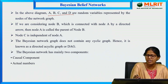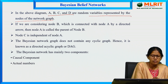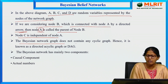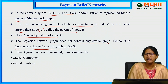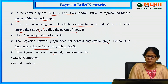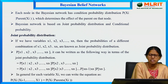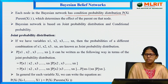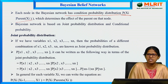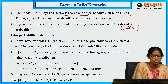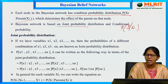A, B, C, D are random variables represented by the nodes of the network graph. If node B is connected with node A by a directed arrow, then node A is called a parent of node B, and node C is independent of node A. The Bayesian network graph does not contain any cyclic graph, hence it is known as a directed acyclic graph or DAG. Each node in the Bayesian network has a conditional probability distribution represented as P(xi | parents of xi), which determines the effect of the parent on that node.